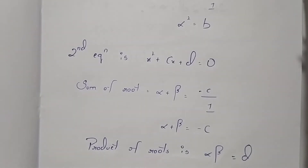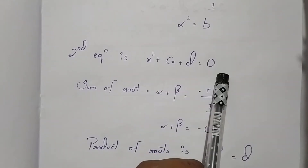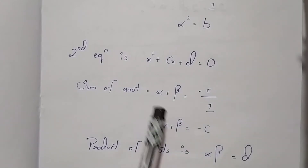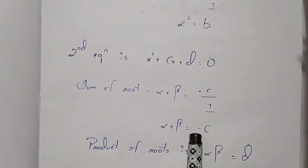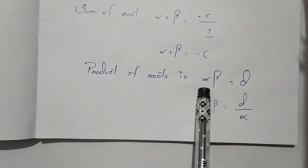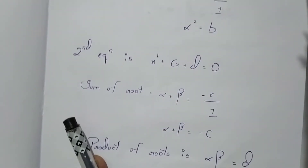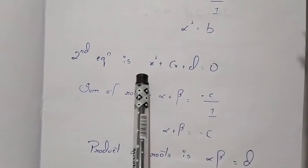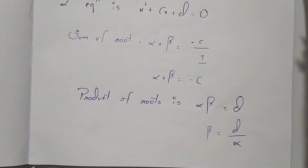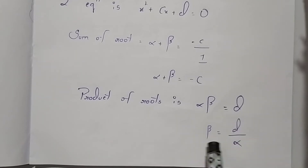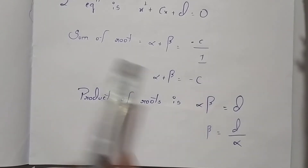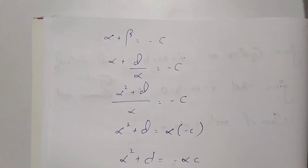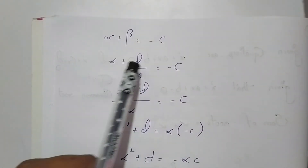Now applying the same process to the second equation x² + cx + d = 0. The sum of roots: alpha + beta = minus c by 1, so alpha + beta = minus c. Product of roots: alpha × beta = d by 1, so alpha × beta = d, giving beta = d divided by alpha.